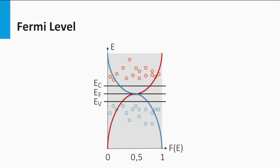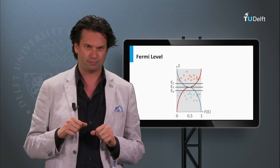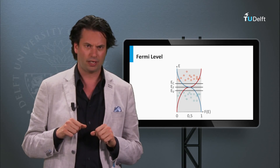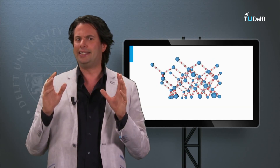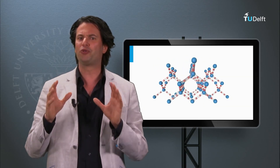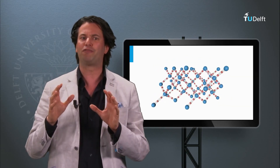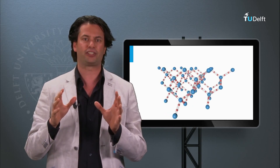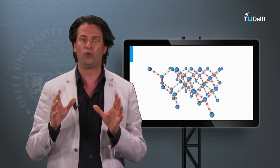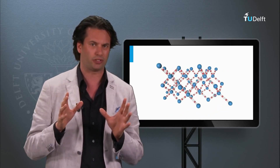1 minus the Fermi-Dirac function shows for a semiconductor the probability that you will find a hole at a certain energy level. This week we will focus on the behavior of the charge carriers — electrons and holes — in a semiconductor.